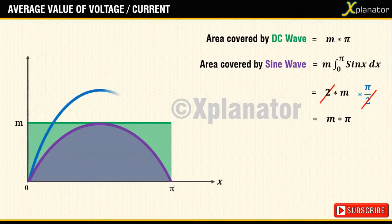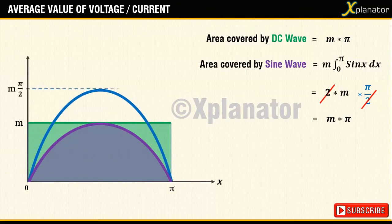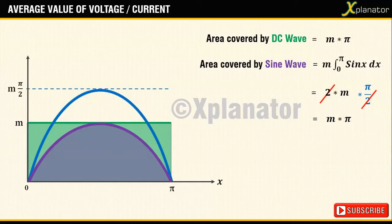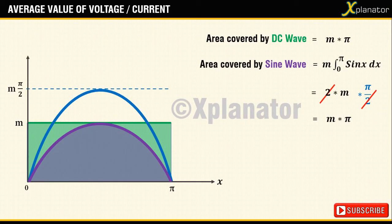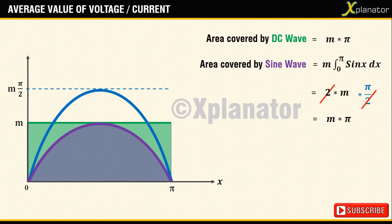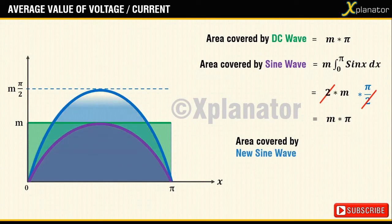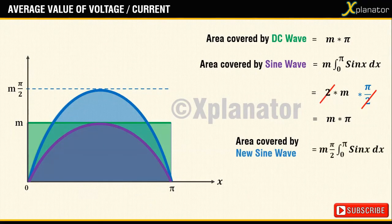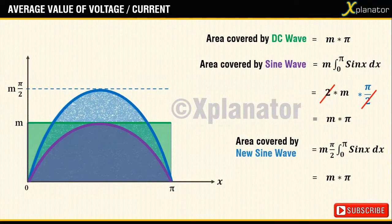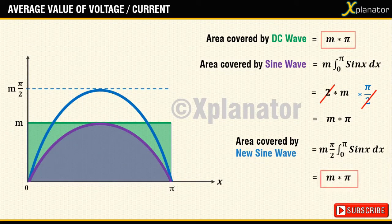Plot this wave with a magnitude of M x pi by 2. This curve is going to be higher than the earlier AC wave. The area under this curve will be integral of the wave along the magnitude. And the final answer will turn out to be M x pi which is matching with the area under the DC wave.